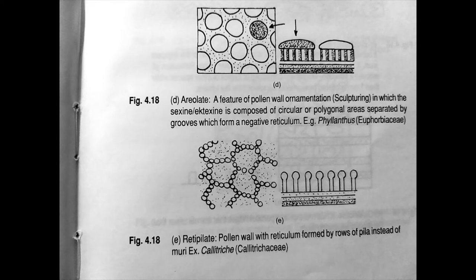Now this is followed by areolate. In areolate we see a completely different type of feature. This is a feature of pollen wall ornamentation in which the sexine or ectexine is composed of circular or polygonal areas separated by grooves which form a negative reticulum. This is found in Phyllanthus of the family Euphorbiaceae.